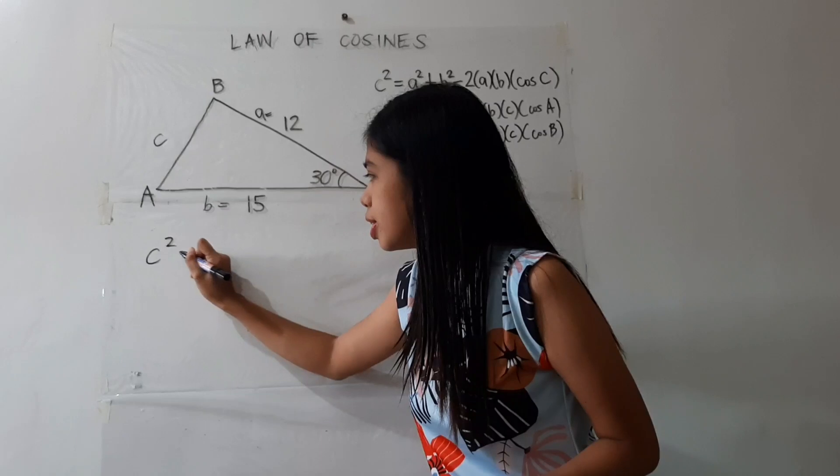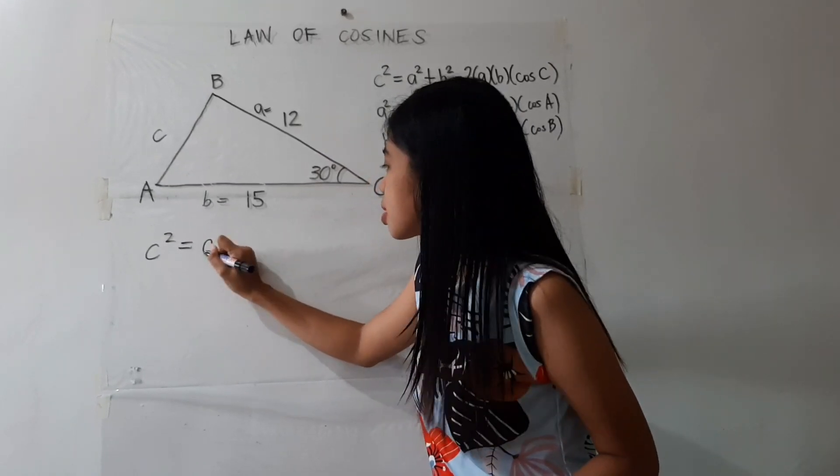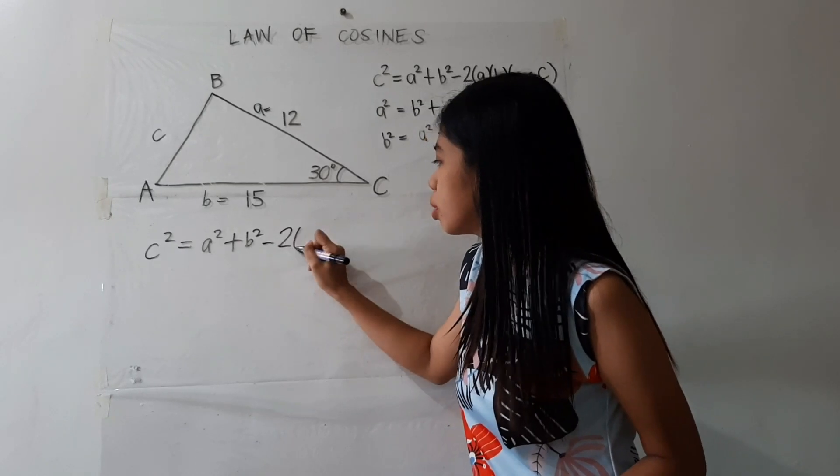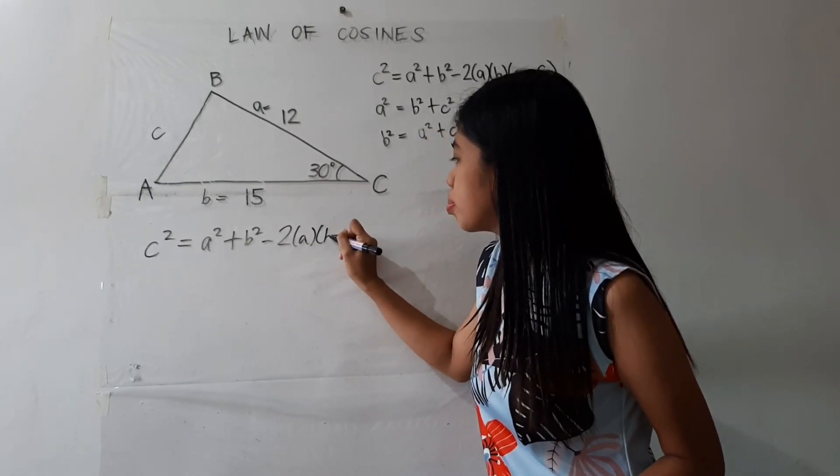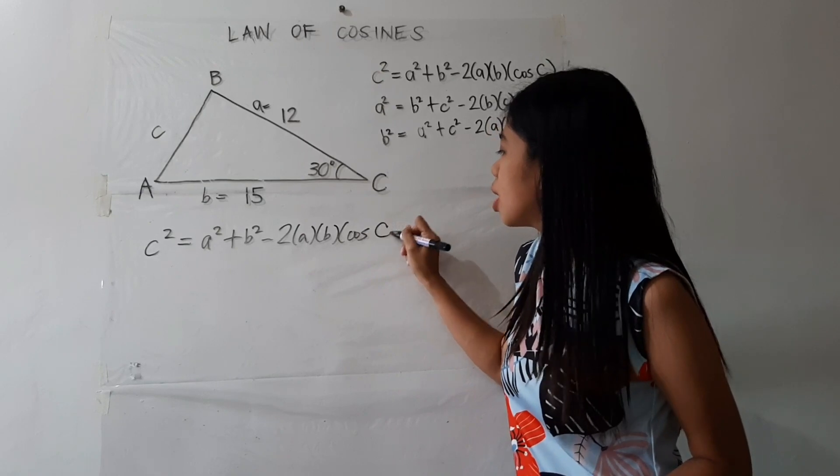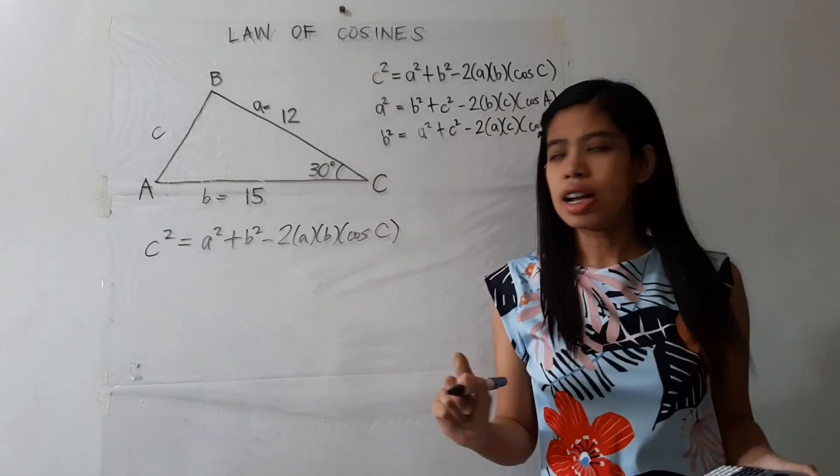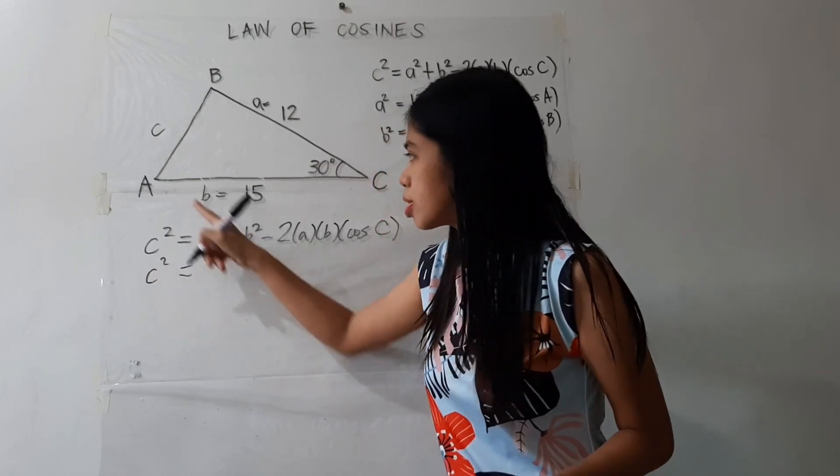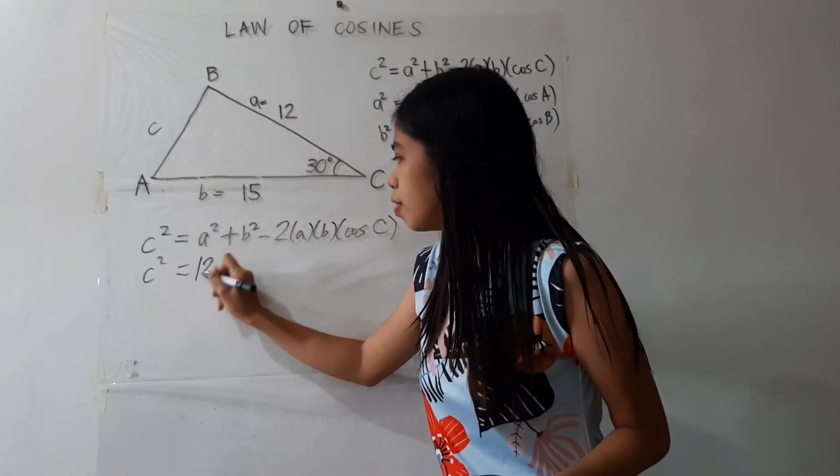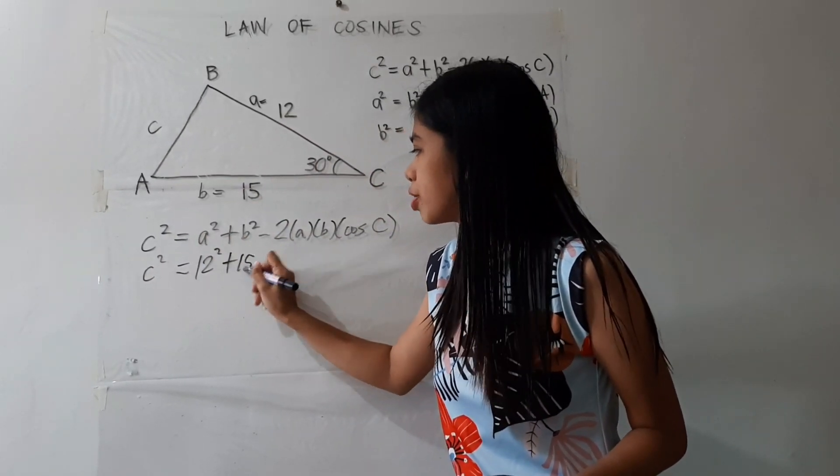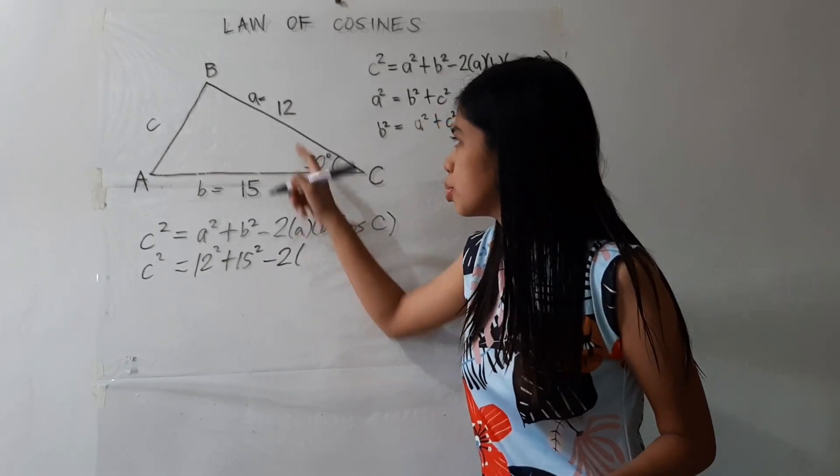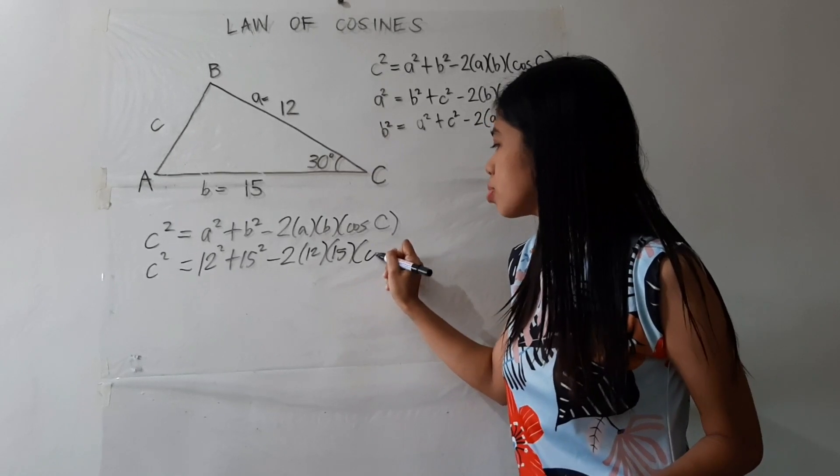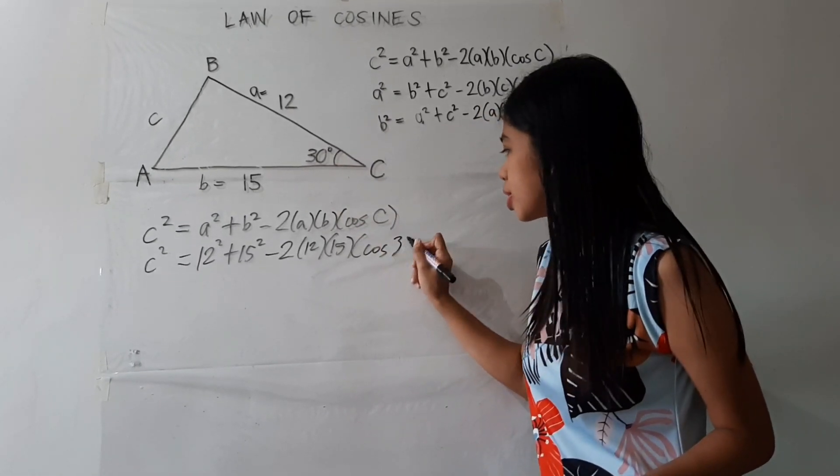So the square of C is equal to the sum of the square of sides A and B minus 2 times A times B times cosine of angle C. Alright, so it's just a simple substitution. So side A, that's 12 squared plus 15 squared minus 2 times 12 times 15 times the cosine of angle C. That's 30 degrees.